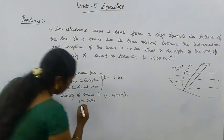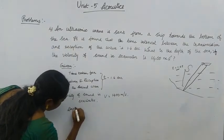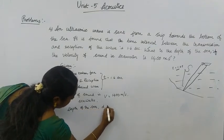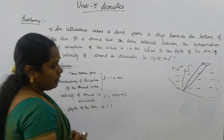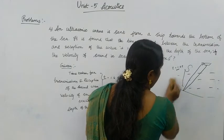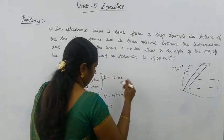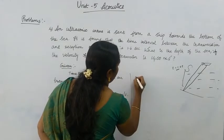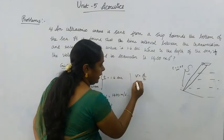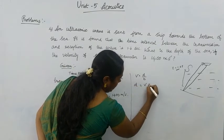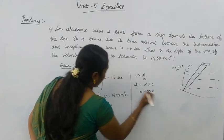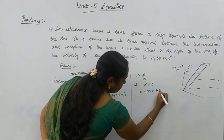What we have to calculate is the depth of the sea — D is equal to what? Now we know the formula: V is equal to D divided by T. Rearranging, D is equal to V multiplied by T. So, what is V? 1400, multiplied by T which is 1.6.